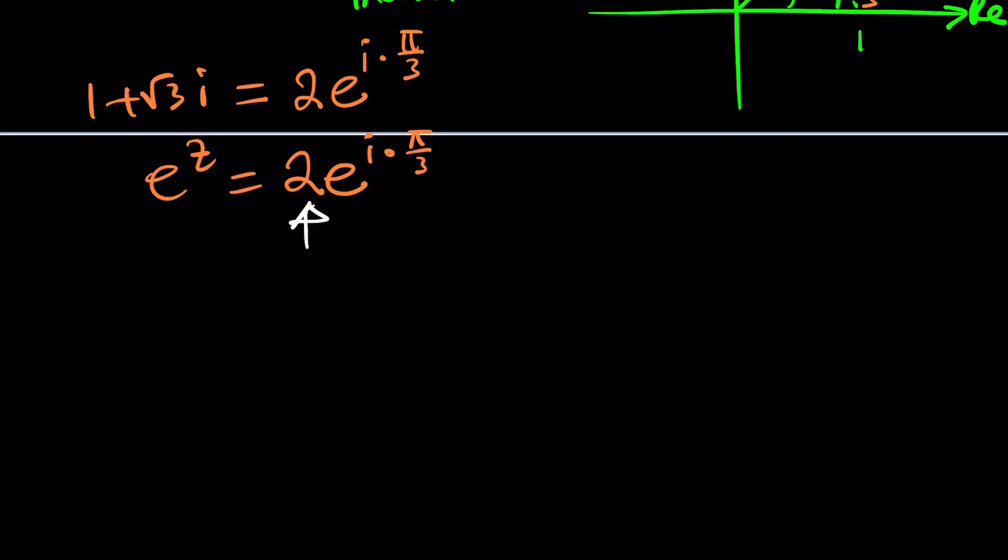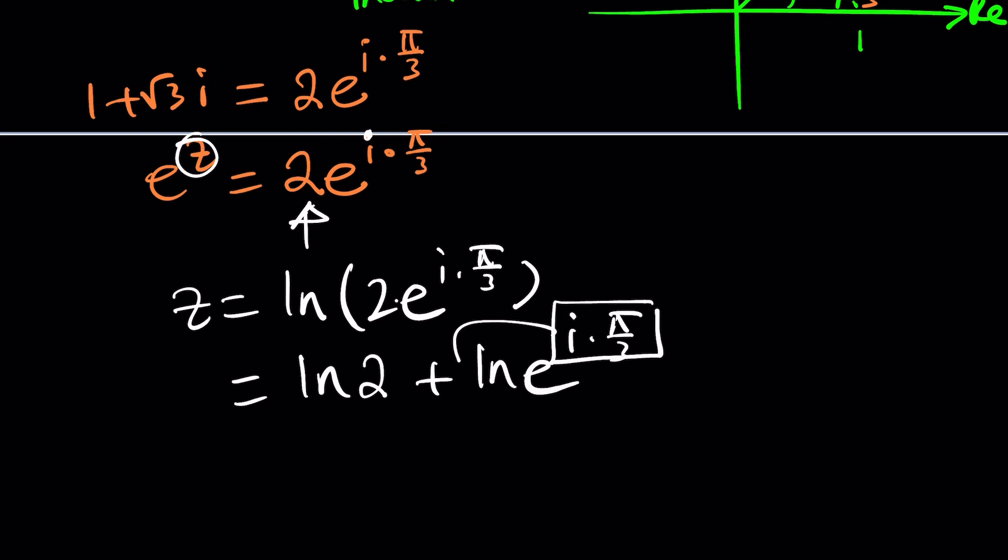And the rest should be fairly easy, don't you think? Well, if you just log both sides, but this time it's going to be different because you're not logging a complex number. You're logging an exponential. So let's go ahead and do it. We're going to get z is going to be ln of a product. When you have a product, it turns into a sum. It's going to be ln 2 plus ln e to the i pi over 3. But ln e is 1, so you're going to bring it to the front. And guess what? z is going to be ln 2 plus i times pi over 3.